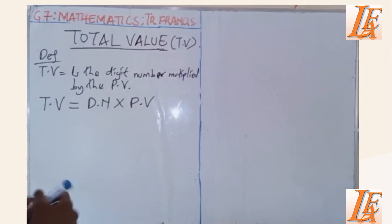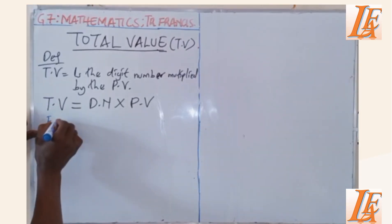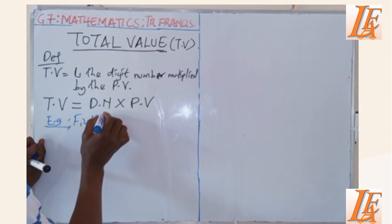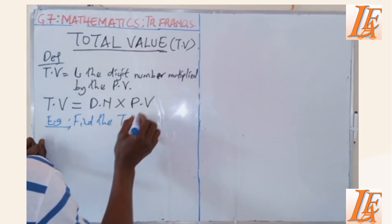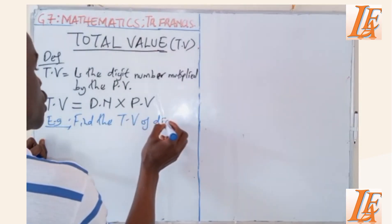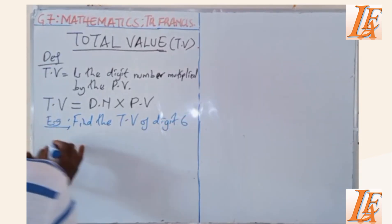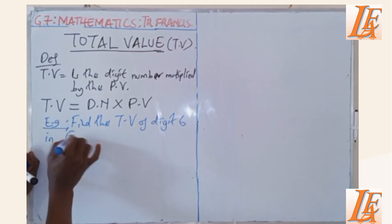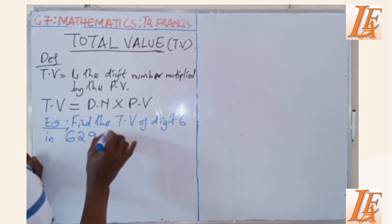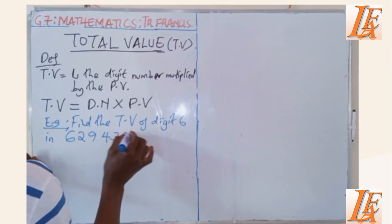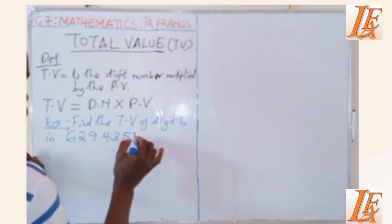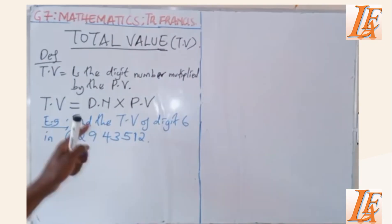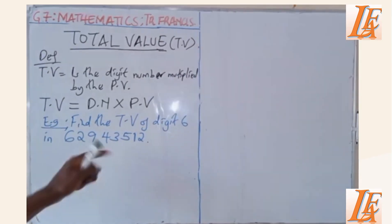For example, find the total value (TV) of digit 6 in 6,294,351,2. So there is a number we've been given. We're told to find the total value of digit 6 in this given number.